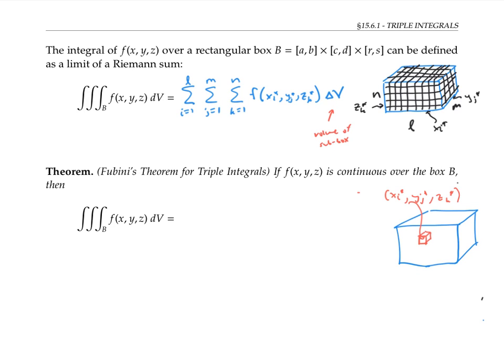Now when we were doing two dimensional integrals, we thought of the function f as representing the height of a function over a sub rectangle. And here we can think of this as being the four d height over our sub box, although it's a little hard to visualize that. You can think of this Riemann sum as representing an approximate four dimensional volume.